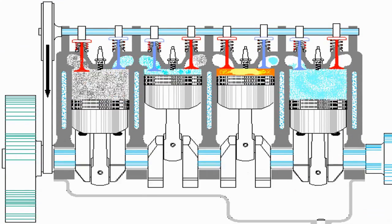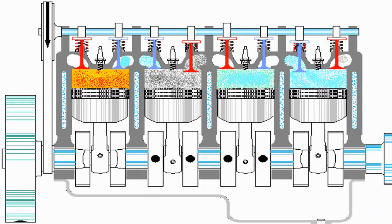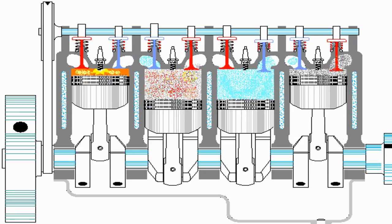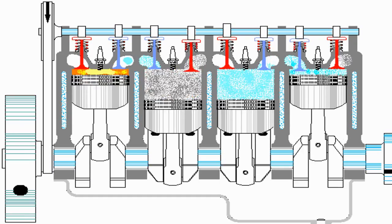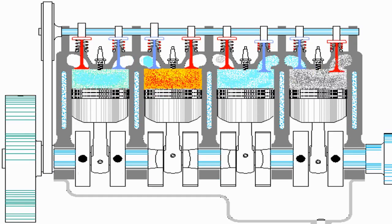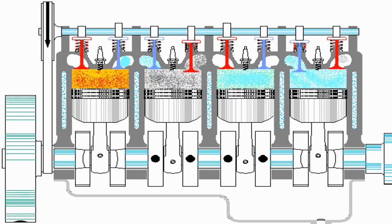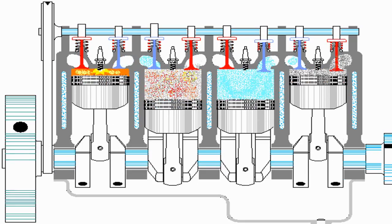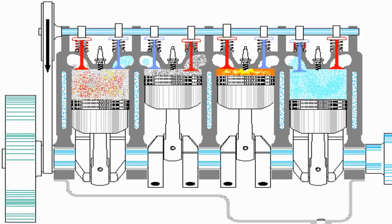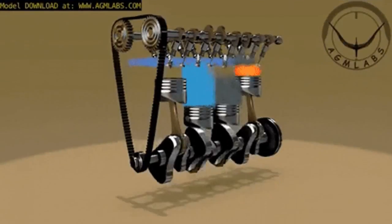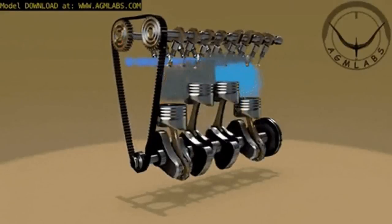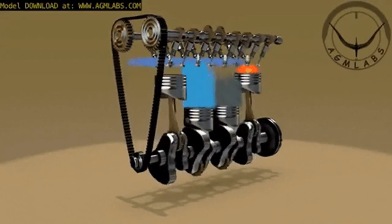An internal combustion engine is a heat engine in which the combustion of a fuel occurs with an oxidizer, usually air, in a combustion chamber that is an integral part of the working fluid flow circuit. The expansion of high-temperature and high-pressure gases produced by combustion applies direct force to components such as pistons, turbine blades, a rotor, or a nozzle, moving them over a distance and transforming chemical energy into useful mechanical energy.